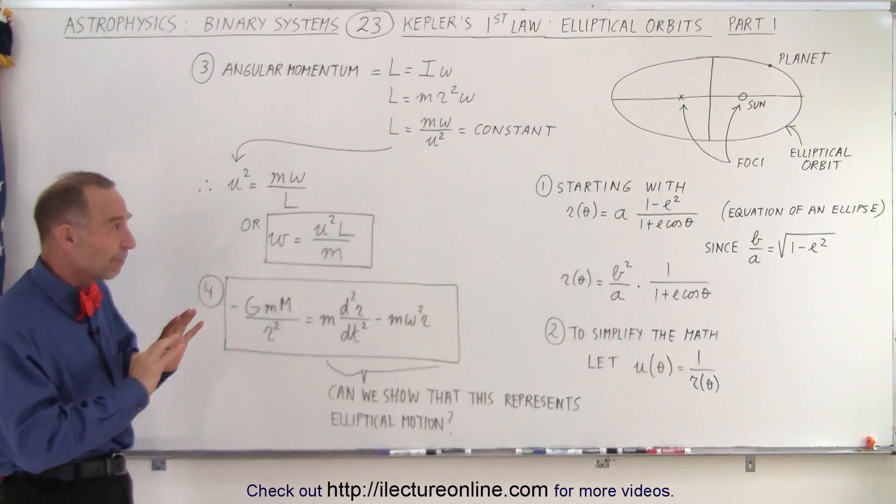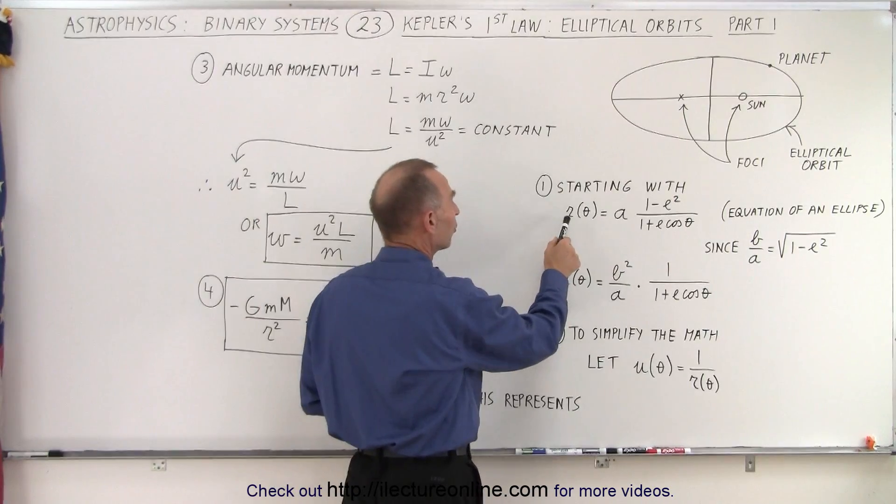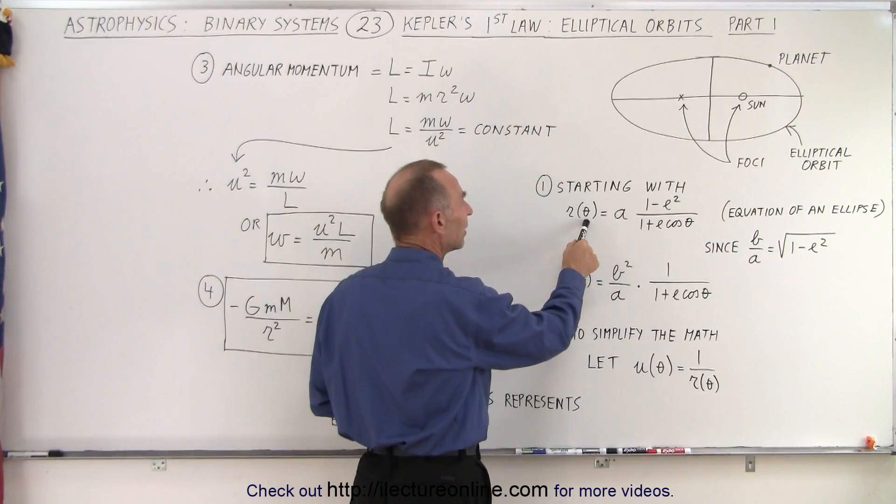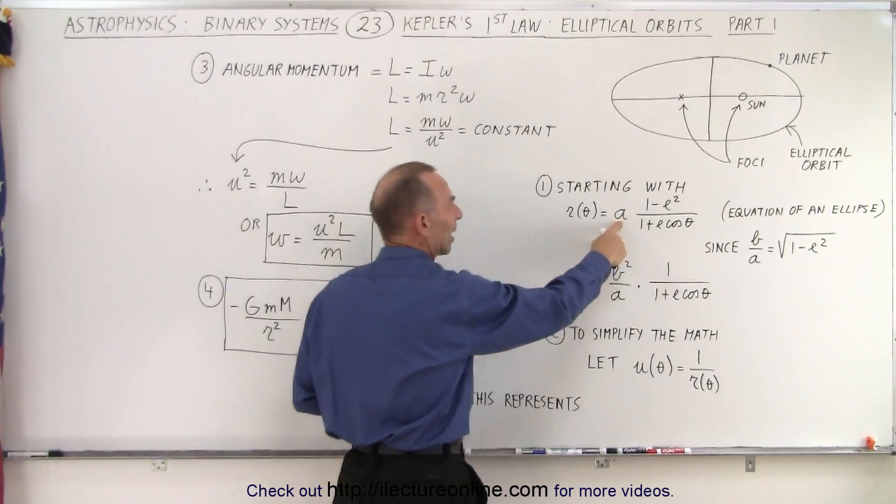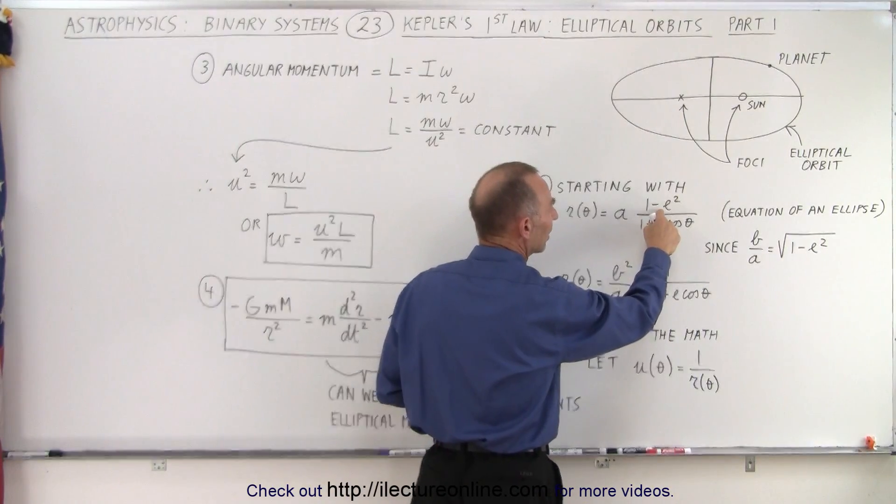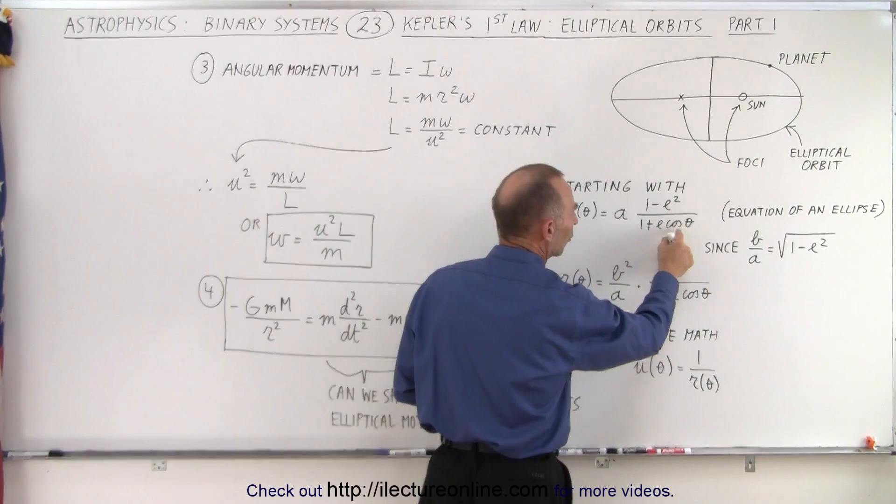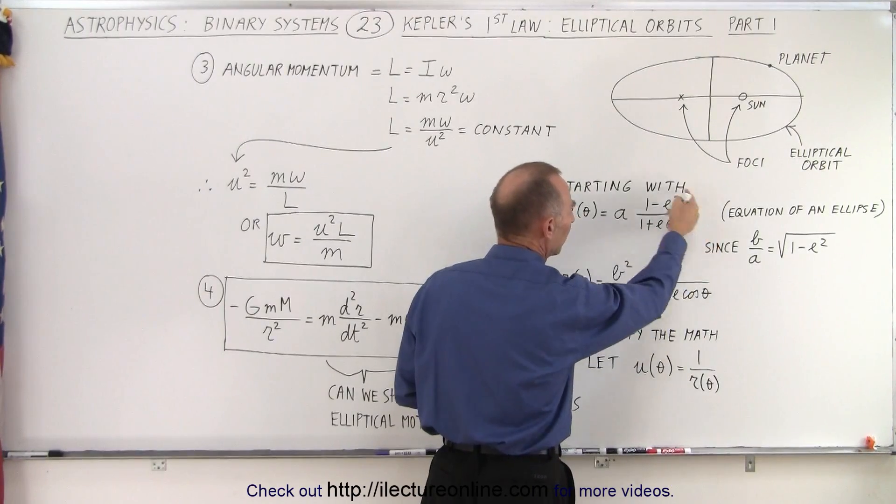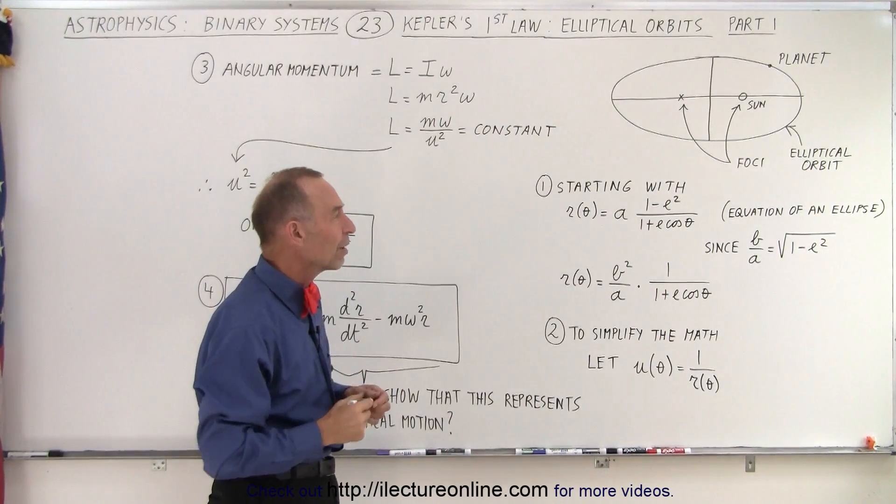Let's first cover some basic concepts. We have an equation for the radius as a function of theta, where A is the semi-major axis and E is the ellipticity or eccentricity of the orbit. We have cosine of theta because it's a function of theta. This is understood to be the equation of an ellipse.